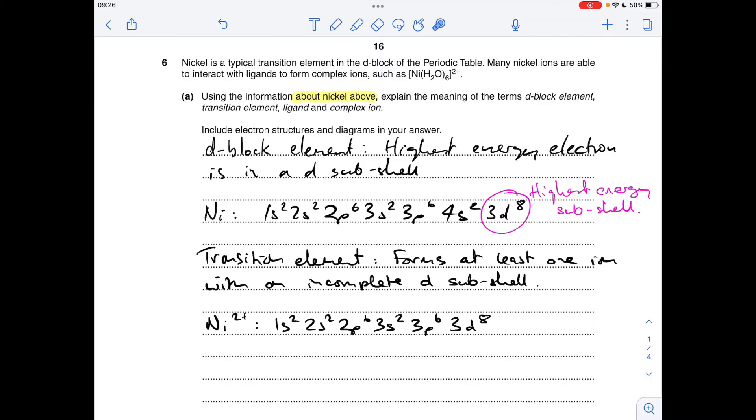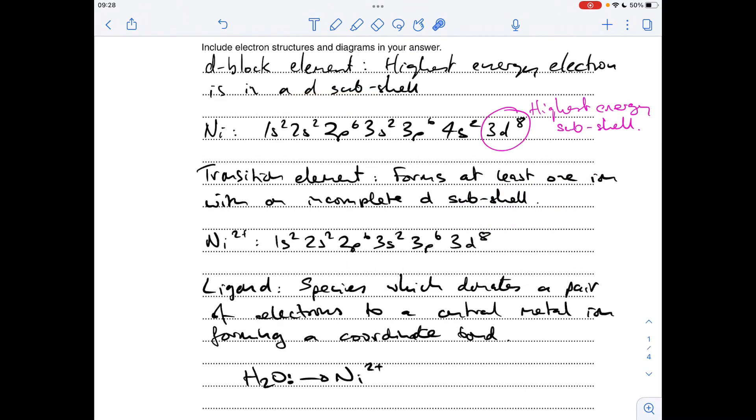Moving on to ligand. A ligand is defined as a species which donates a pair of electrons to a central metal ion and forms a coordinate bond in the process. Using the information above, we've got water molecules surrounding this nickel 2+ ion. They're bonding to the nickel 2+ via a coordinate bond. The lone pair on the oxygen is donating that pair of electrons to form that coordinate bond.